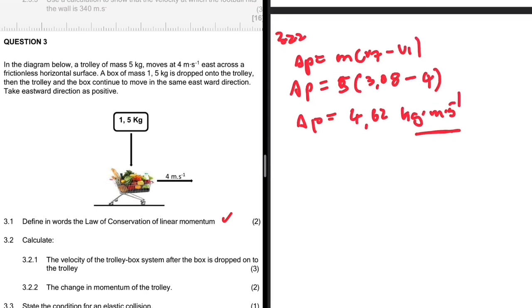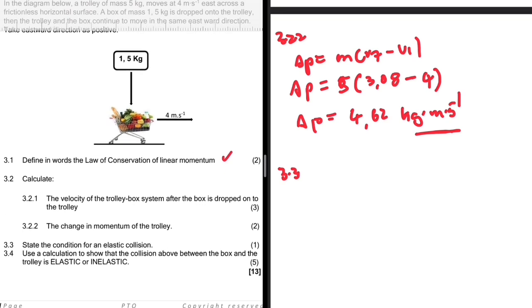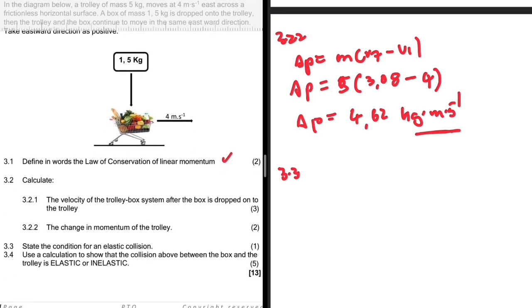3.3: State the condition for an elastic collision. We've already talked about that in the MCQ. For a collision to be elastic, momentum needs to be conserved and kinetic energy needs to be conserved.